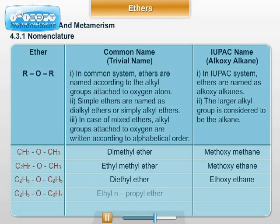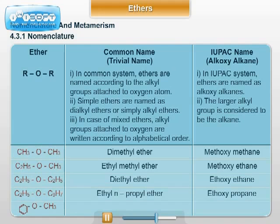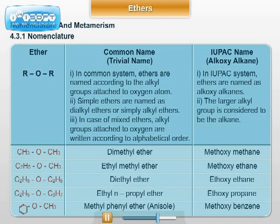C₂H₅OC₃H₇ — common name: ethyl n-propyl ether; IUPAC name: ethoxypropane. The next example is C₆H₅OCH₃ — common name: methyl phenyl ether, also known as anisole; IUPAC name: methoxybenzene.